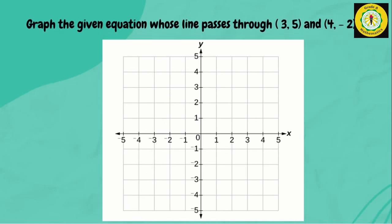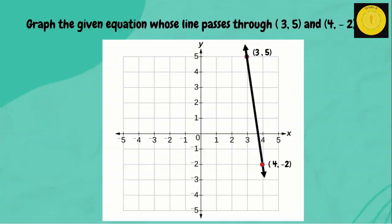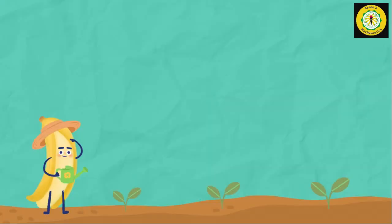Third example: graph the line passing through (3, 5) and (4, negative 2). We plot (3, 5) and (4, negative 2) on the coordinate plane, then connect the two points.